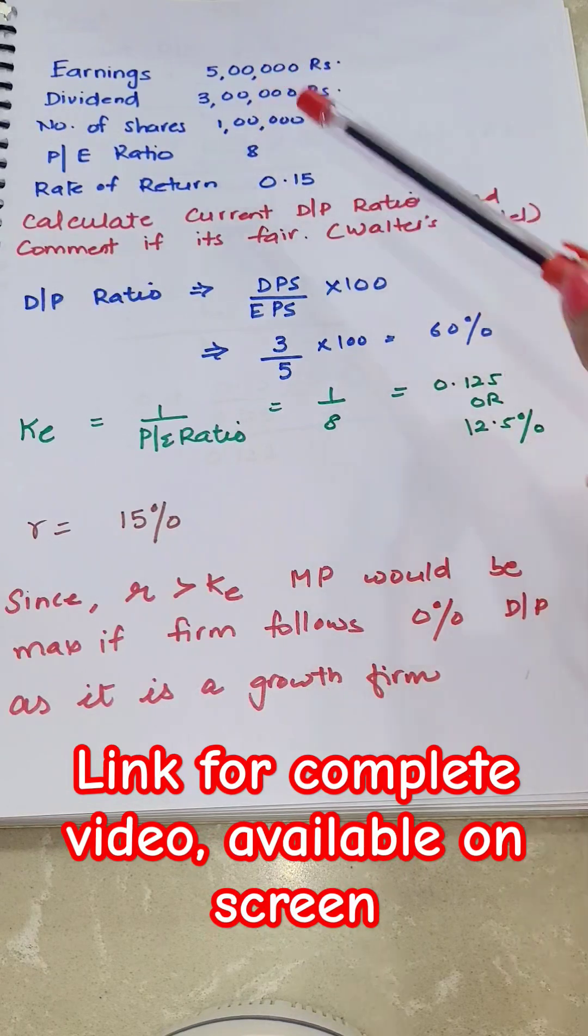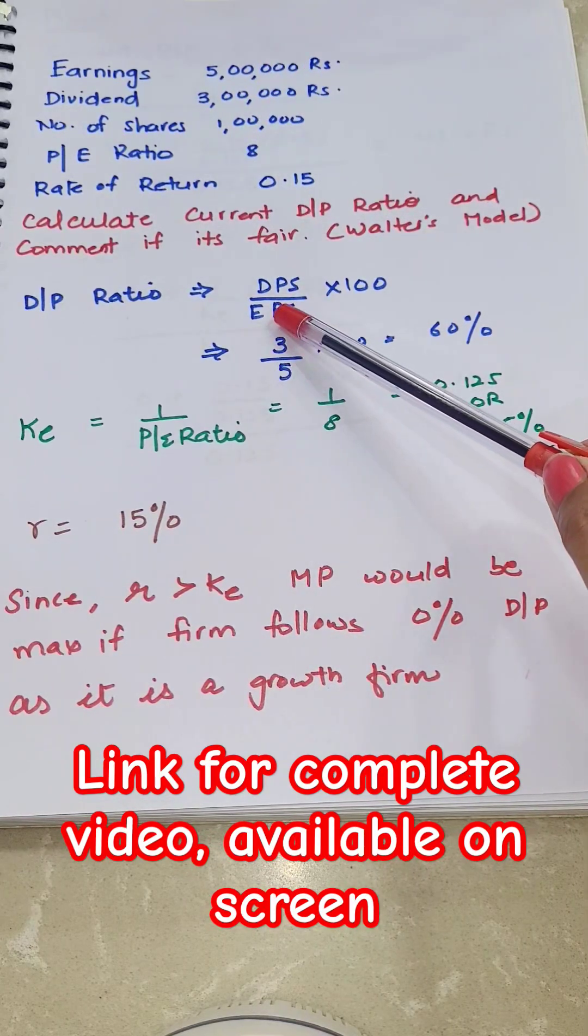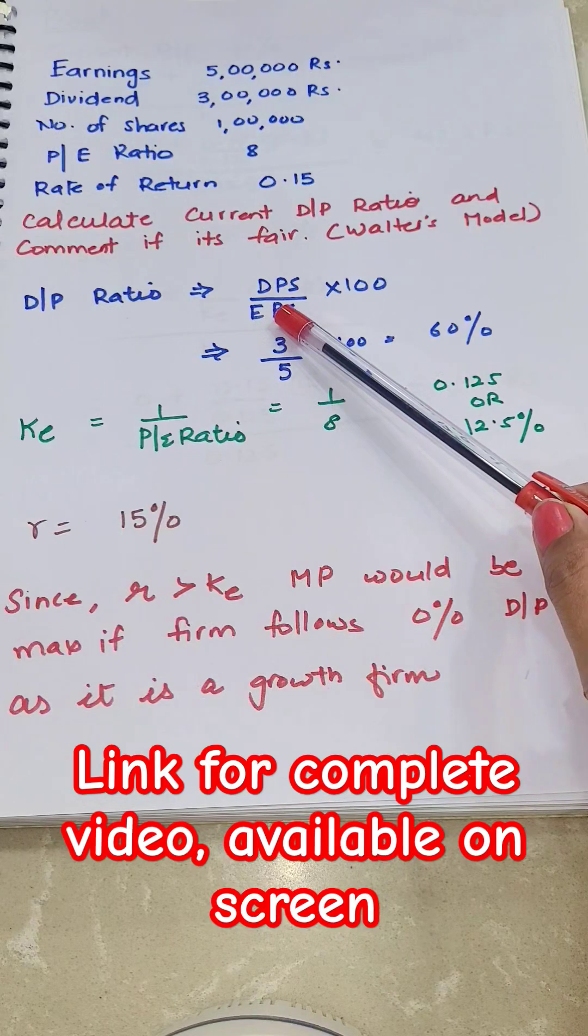3 lakh by 1 lakh is 3 rupees per share, that is DPS. Similarly, we can calculate earning per share also.